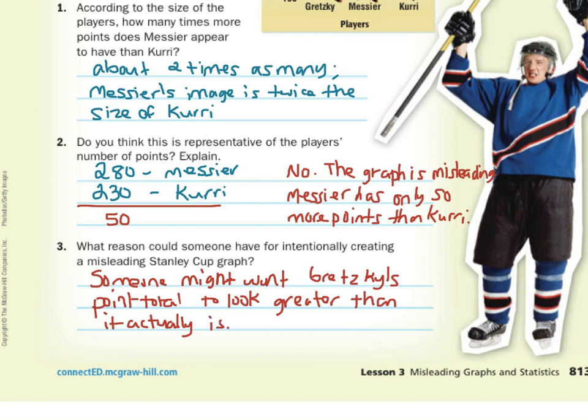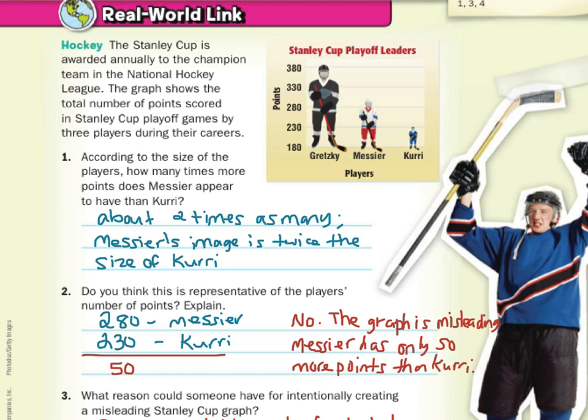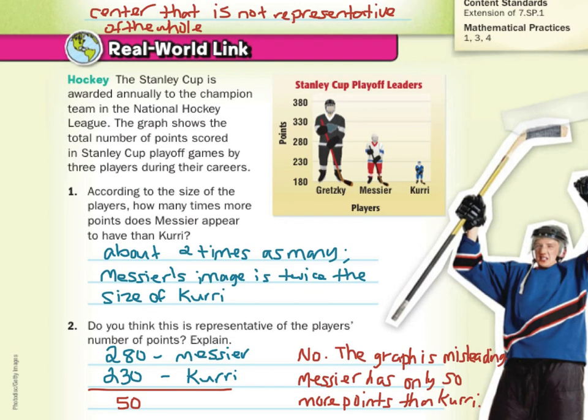There is that show on television now called Numbers Never Lie, but you can certainly make it look like they're lying. It looks like Gretzky's almost four times as big as Curry, but that's not the case. Numbers lie. Graphs lie. And it's our job to figure out how and why.